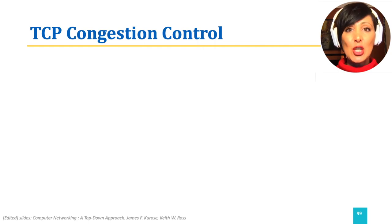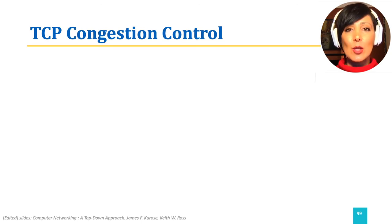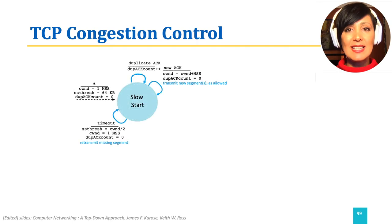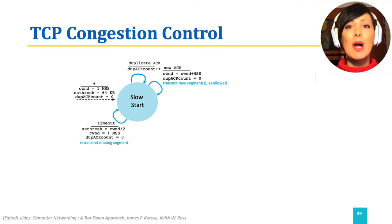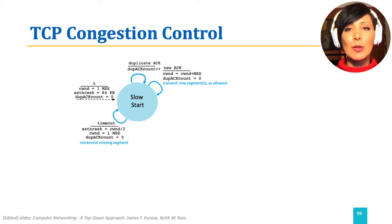We can illustrate the decision-making we discussed for TCP congestion control with an FSM. The process starts in a slow start state. In this state, as we discussed, CWND is increased by 1 MSS for every received ACK. A timeout while in this state would reset CWND to 1 and restart the slow start from the beginning.